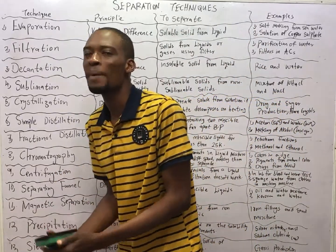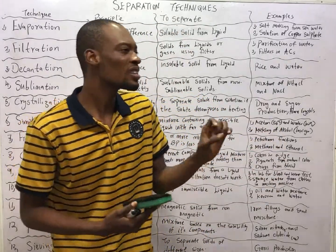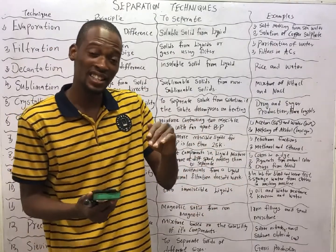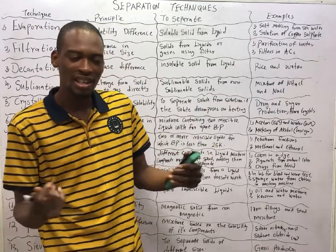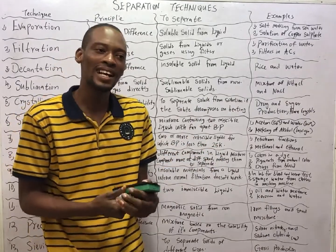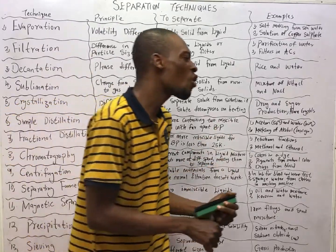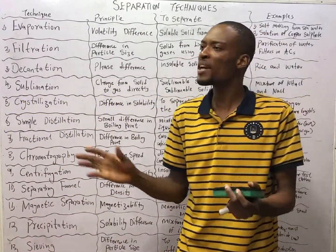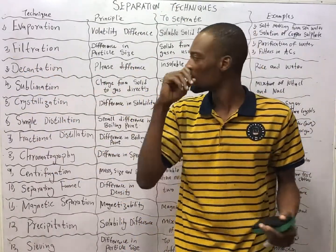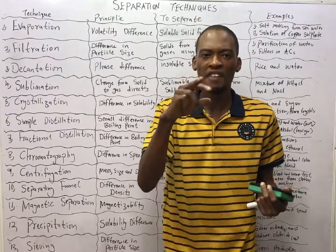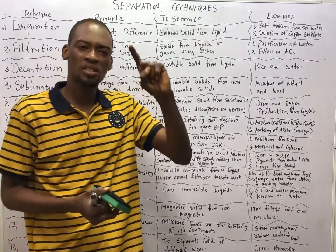When the solid changes to gas directly without passing through the liquid state, we say the solid has sublimed. And when a gas changes to solid directly without passing through the liquid state, we say that is deposition. In cold areas, you look at your window and from nowhere you see snow — so gas is deposited on the window. That is deposition. Evaporation, on the other hand, is the change of state of matter from liquid to gas.